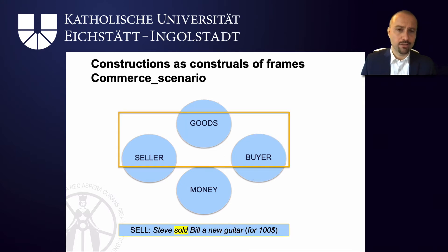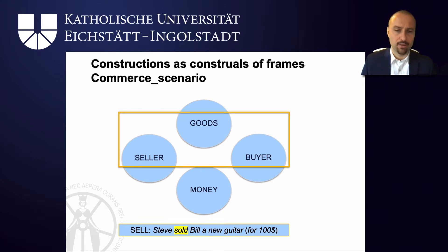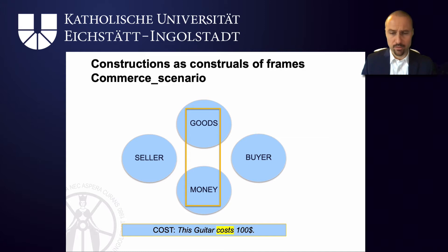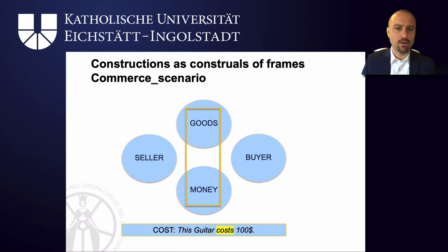'Sell', in contrast to 'buy', focuses on seller, buyer, and goods — so 'Steve sold Bill a new guitar' and the money is backgrounded. And finally 'cost' — 'the guitar cost $100' — backgrounds the seller and the buyer. We still activate them in our commerce frame, but when we use the lexical item 'cost' we focus on money and goods and put these in the forefront.